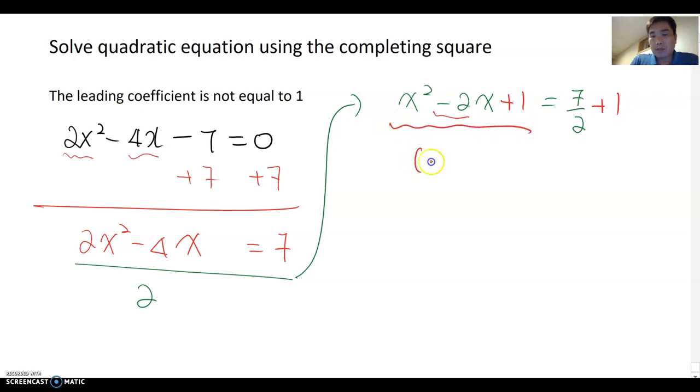If you factor this out, it becomes x minus 1 squared equal to 9 over 2, because 7 over 2 plus 2 over 2 become 9 over 2. Now, next step, you take square root of both sides and don't forget plus and minus. Then this becomes x minus 1 equal to plus and minus 3 over root 2. Now combine 1.